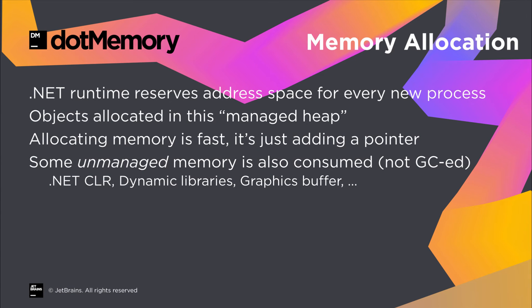Now let's see what happens under the hood in the .NET runtime. When starting a .NET application, the runtime reserves address space for the process. This address space will be managed by the runtime and all of our objects will be allocated in it. Since .NET has this block of memory available, it can simply add a pointer to our object instead of having to ask the operating system for more memory. Of course, some unmanaged memory is also consumed by the .NET runtime itself, for graphics buffers, dynamic libraries and such.